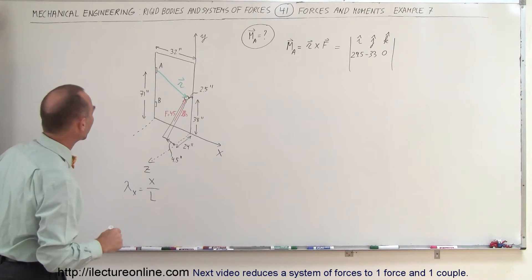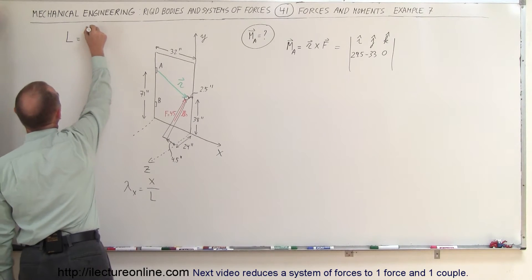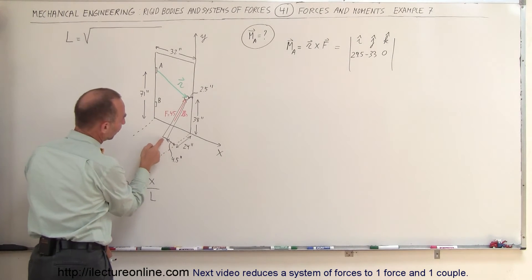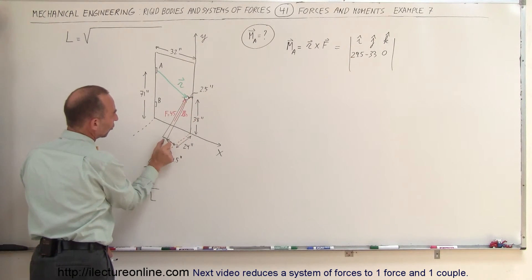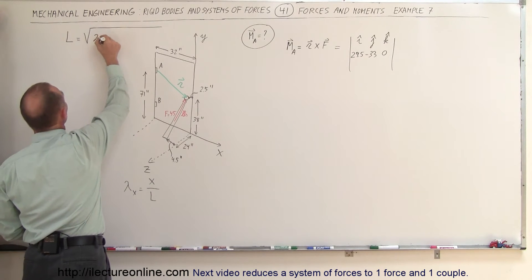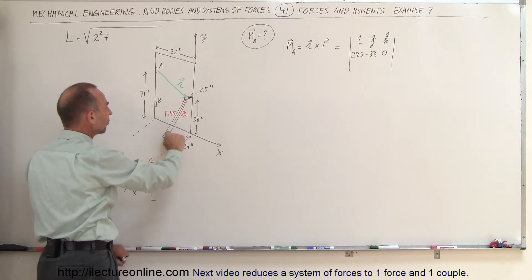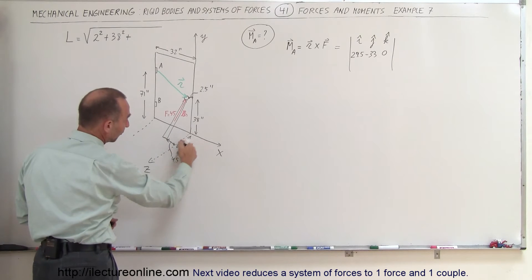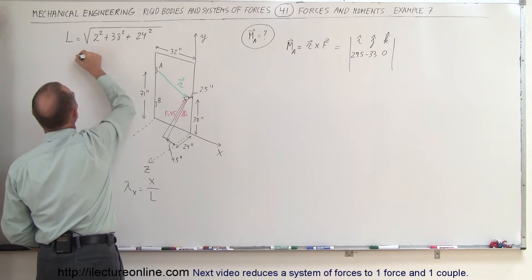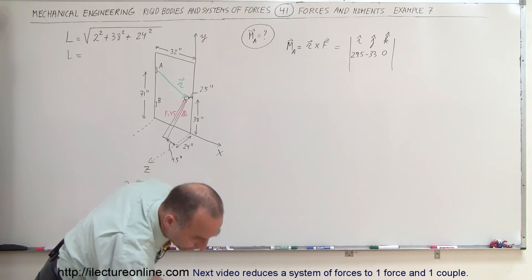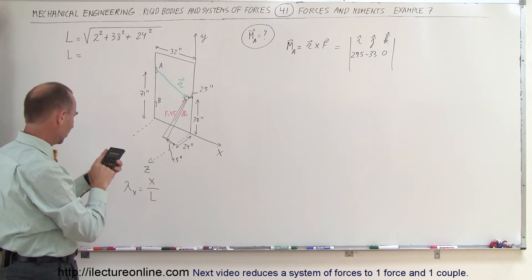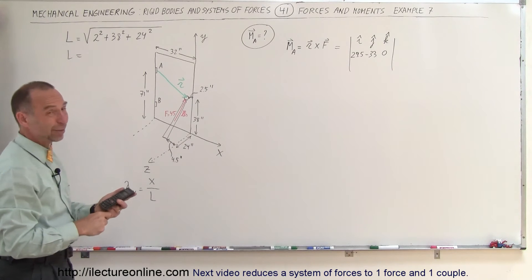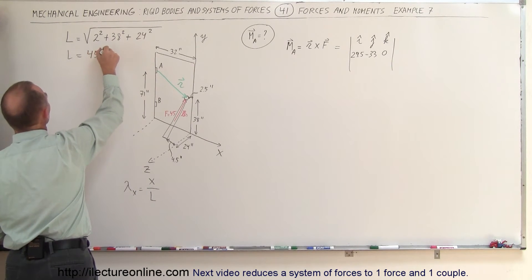The length of the piece of wood is the square root of the sum of the squares of its components. In the X direction, we go from 4.5 inches to 2.5 inches, a difference of 2 inches. In the Y direction, we go from the ground to the door handle: 38 inches. In the Z direction there are 24 inches. So the length is √(2² + 38² + 24²) = √(4 + 1444 + 576) ≈ 44.99, which we round to 45 inches.